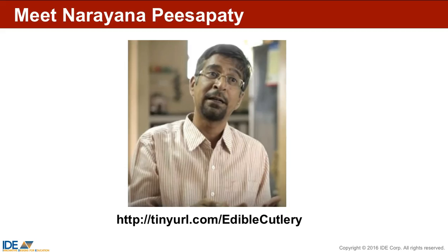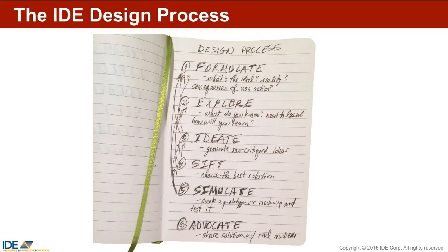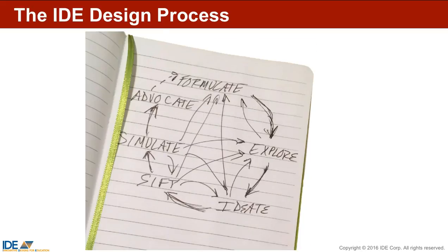I really liked this problem and Narayana's solution, which is why I used it to share our design process. If you want to hear more about edible cutlery, you can watch the video on YouTube. To recap, the six steps are: formulate, explore, ideate, sift, simulate, and advocate. While there's an order to the steps, each step can send you off to other steps as you work to find a solution.